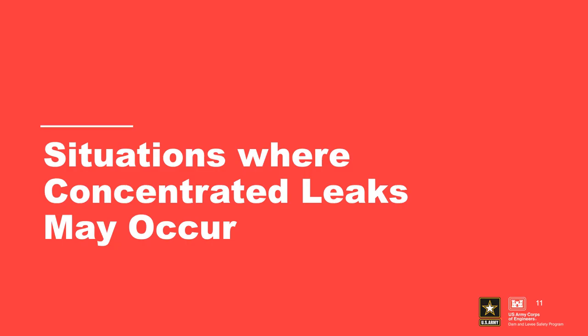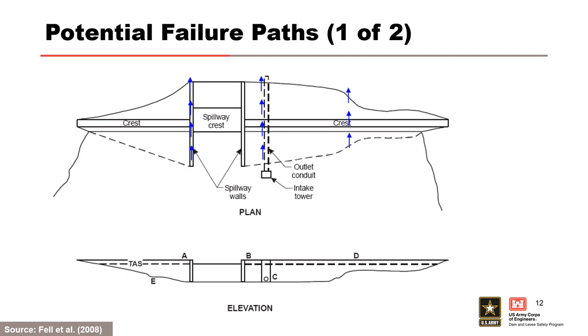Next, let's cover the situations where concentrated leaks may occur. Where information is available for estimating crack width and depth of a given mechanism, it is included. A broader discussion is provided at the end and in the toolbox overview. This figure shows failure paths that can be associated with structures, foundations, or poor details in the dam. These include locations adjacent to the spillway walls at A and B, adjacent to the outlet conduit at C, and over irregularities in the foundation at D for the upper part of the embankment and at E for the lower part, where low stresses and potential for cracking and hydraulic fracture due to differential settlement are likely.